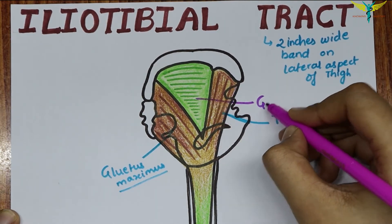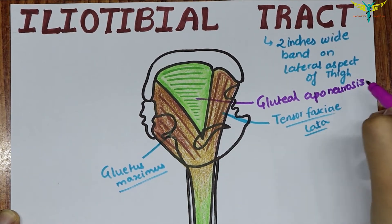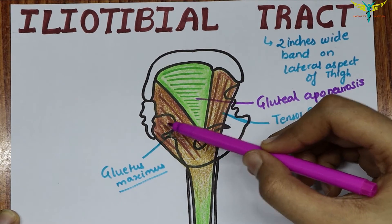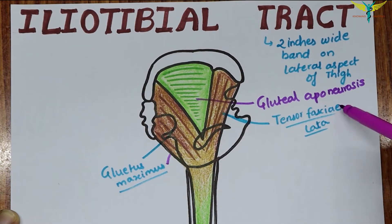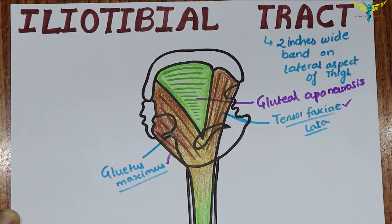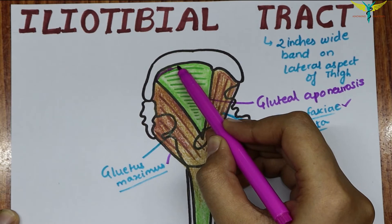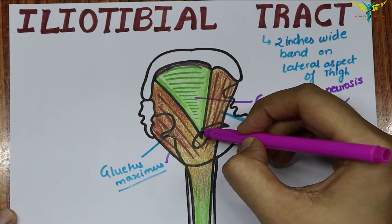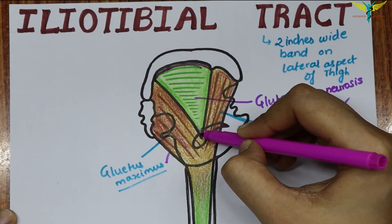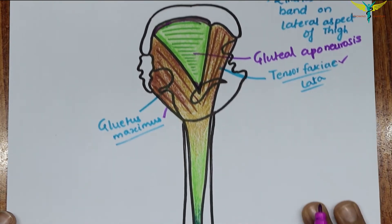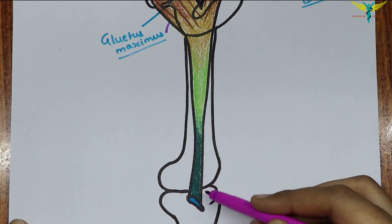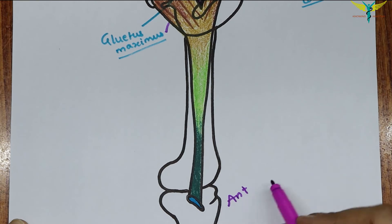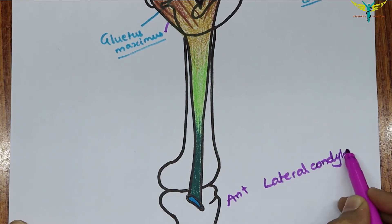The gluteal aponeurosis is the layer of the iliotibial tract present between the gluteus maximus and the tensor fascia latae. The superficial lamina is attached to the tubercle of the iliac crest, and the deep lamina is attached to the capsule of the hip joint. Inferiorly, the tract is attached to the smooth area on the anterior surface of the lateral condyle of the tibia.